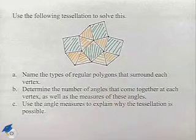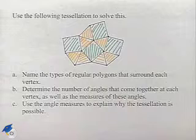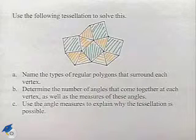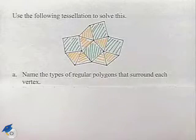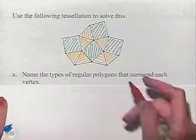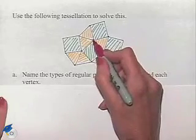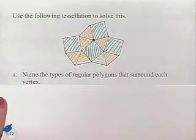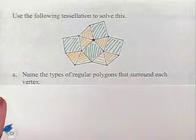In part A, we want to name the types of regular polygons that surround each vertex. Let's do that first. So let's pick a particular vertex, and I'm going to label it here. We want to name the types of regular polygons that surround that vertex.